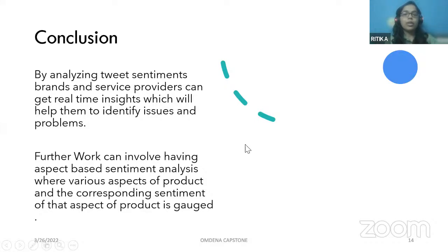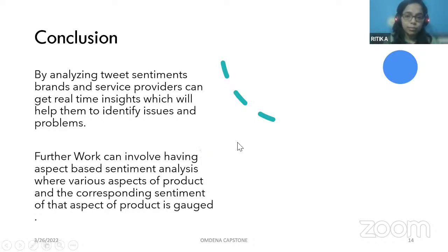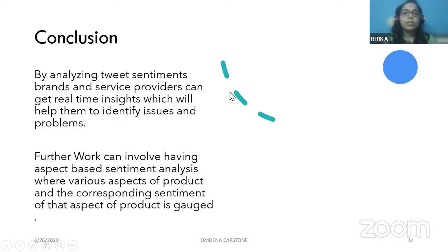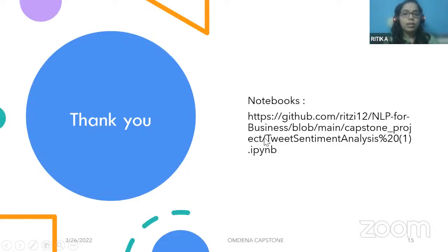In conclusion, tweet sentiment and social media sentiment analysis can provide businesses, consumers, and organizations very insightful information regarding their products and services, and can help them in the long run to modify and enhance their offerings. Further work that can be done is aspect-based sentiment analysis, where for each aspect — such as product features or service features — we can get a sentiment for each one. Lastly, I'd like to thank Omdena School and Juber sir for this initiative.